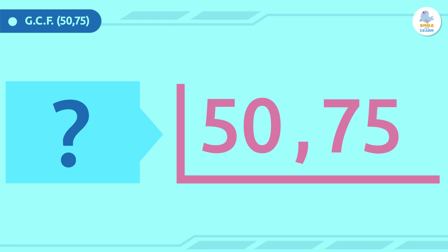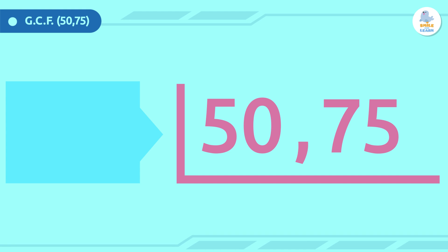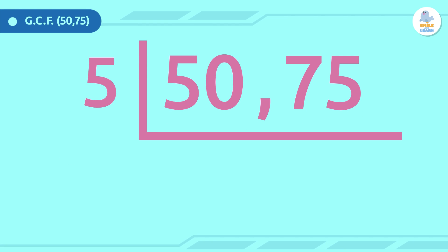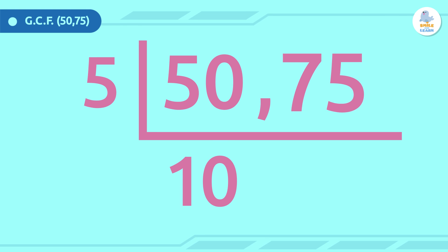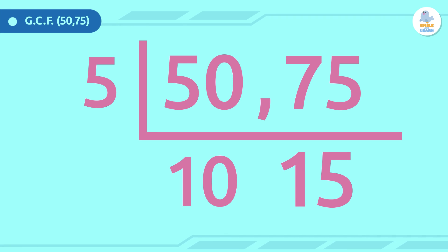We begin by writing 50 and 75 with a comma in the middle. Then we draw a line to the left of the first number and then under both. Now we have to think of the smallest prime number that divides exactly into 50 and 75. Looking at these numbers, I think it's the number 5. We write 5 to the left of the two numbers and divide. 50 divided by 5 is 10, and 75 divided by 5 is 15. We write 10 under the number 50 and 15 under the number 75, with a comma in the middle.